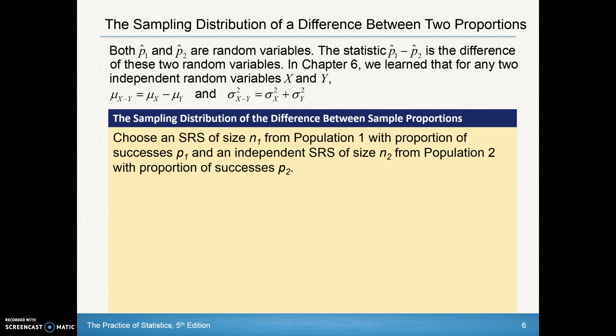Both P-hat-1 and P-hat-2 are random variables. In Chapter 6, we learned that for any two independent random variables X and Y, the mean of the difference is just subtracting each individual mean. But we can't subtract standard deviations—we can add or subtract variances. So when we find the difference in variances, we actually add the variance of each distribution. Then if we want the standard deviation of that difference, we square root the sum of the variance of X's plus the variance of Y's.